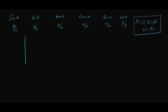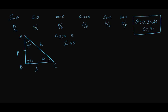To find the values for 45°, let us draw a right-angled isosceles triangle. Here, the perpendicular AB is x, the base BC is also x, and hypotenuse AC can be calculated using the Pythagorean theorem: hypotenuse squared equals perpendicular squared plus base squared. Substituting, we get AC equals x√2.